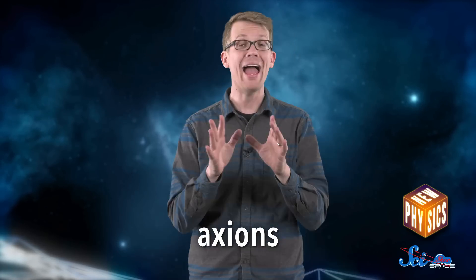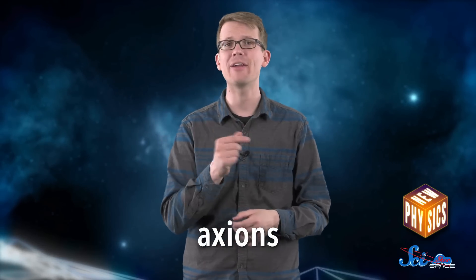There are also new physics people who think axions might be the key. Axions are particles that were predicted back in the 1970s to solve a completely unrelated problem in physics. But like neutrinos, they'd also be almost weightless and hard to detect, and some models suggest that some or even all dark matter could be made of axions.